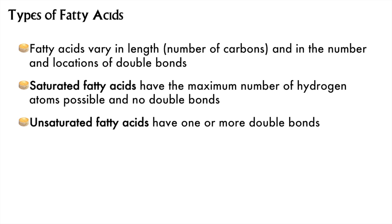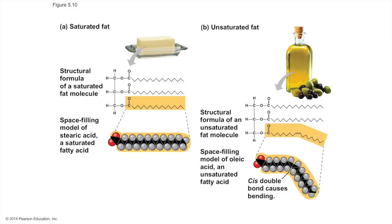Saturated fatty acids are saturated with hydrogens — they have no double bonds. Unsaturated fatty acids have double bonds. The length of the chains and the number and quality of the double bonds affects the physical properties of the fats they produce. Longer carbon chains and no double bonds means the fat will be solid at a higher temperature — think butter. Shorter carbon chains and fatty acids with one or more double bonds will be liquid to a lower temperature — think vegetable oil.